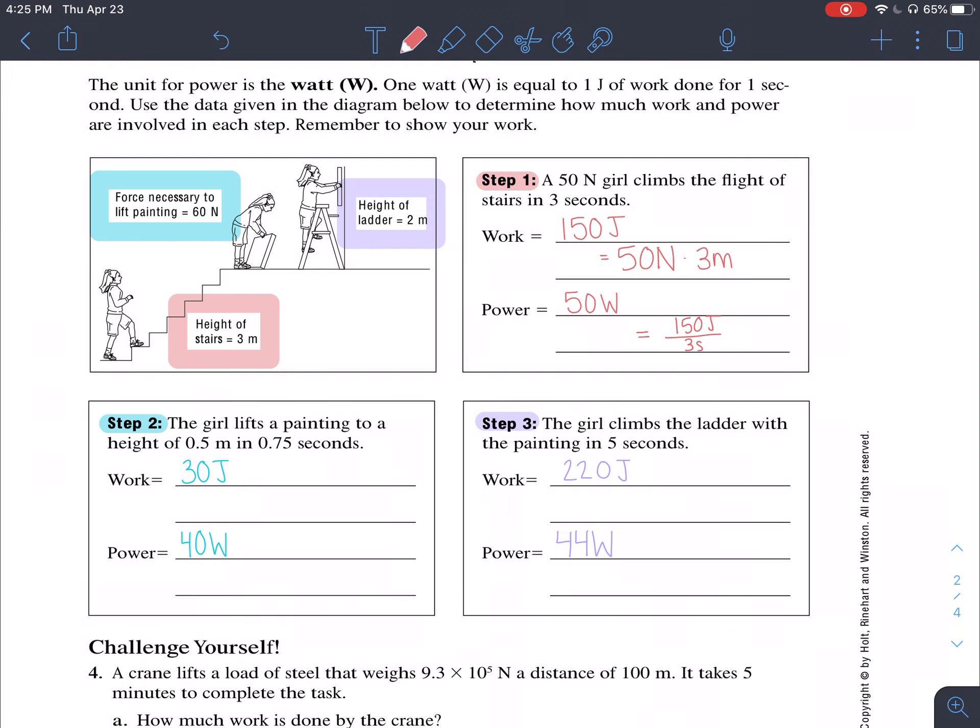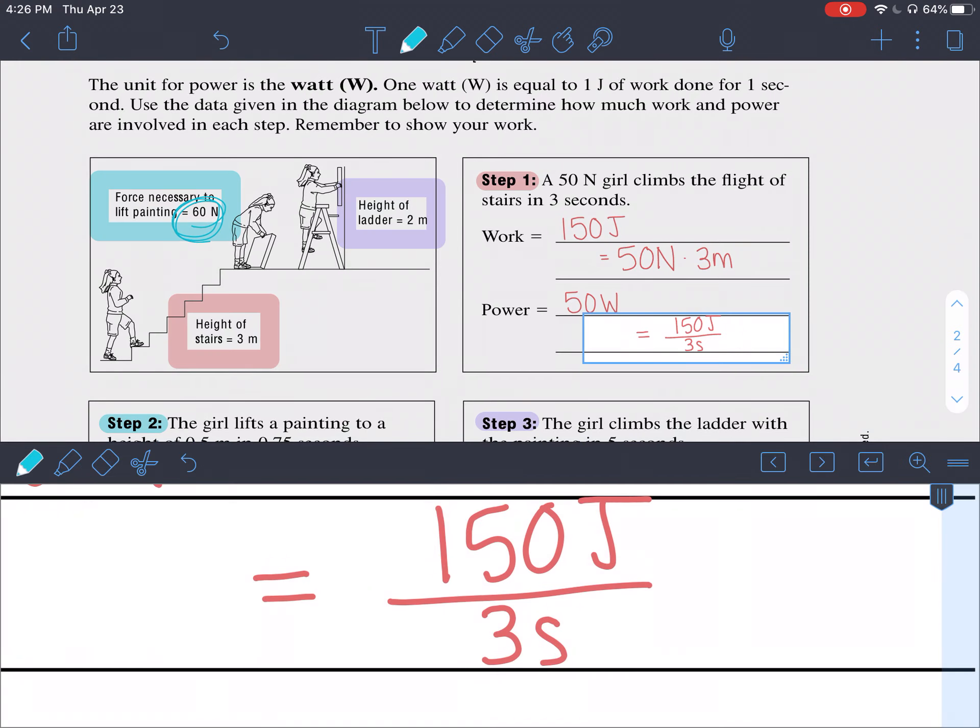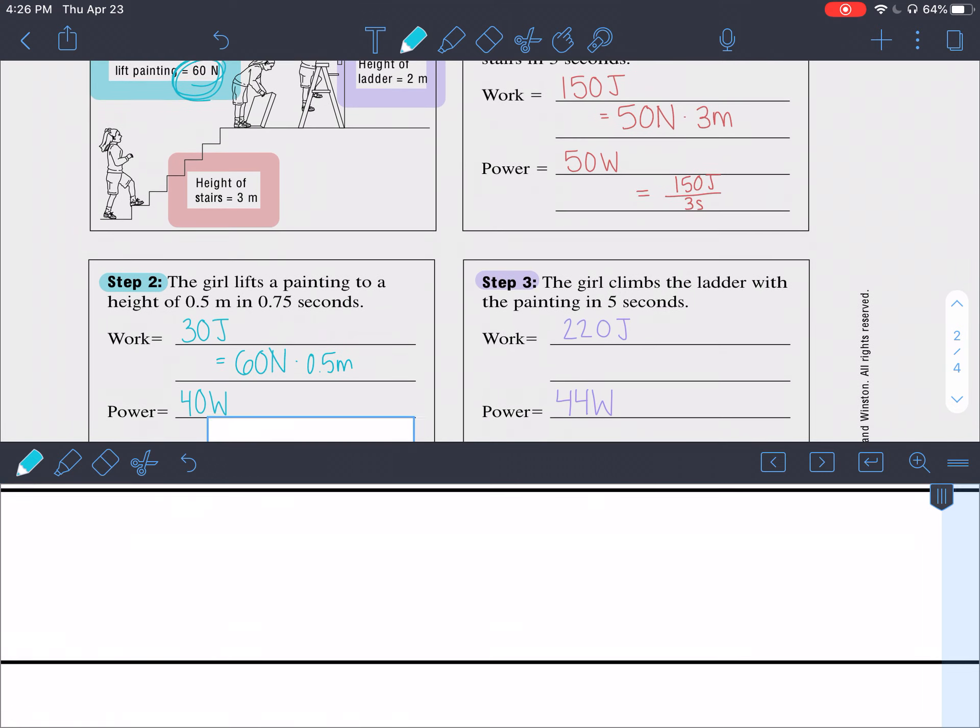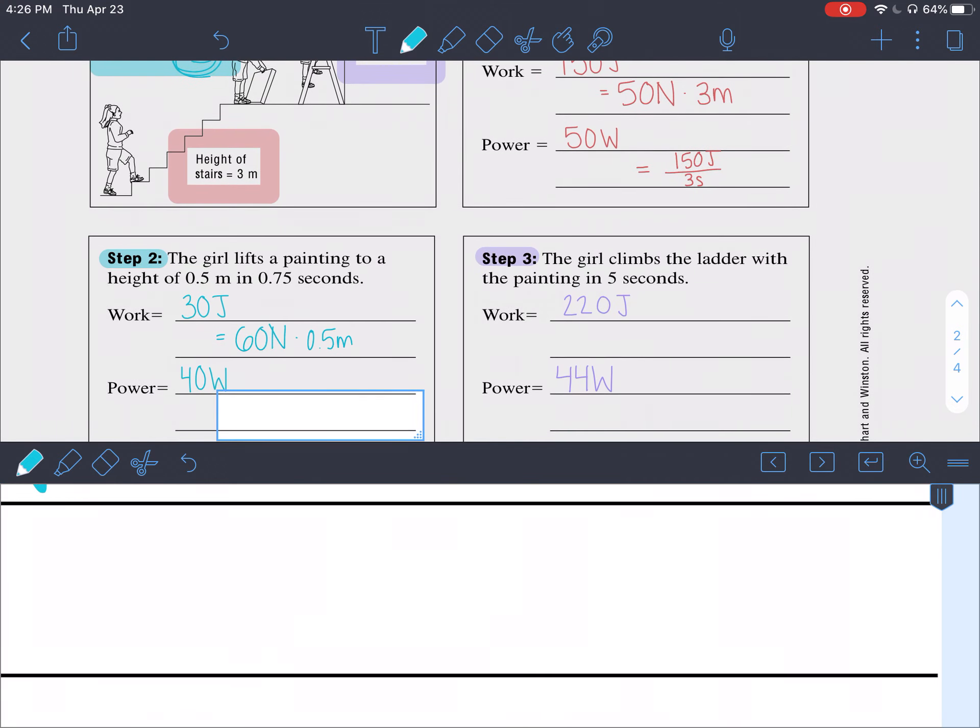All right on to step two in blue. Work is 30 joules for the girl who is now lifting a painting to a height of 0.5 in 0.75 seconds. We need to know her force to be able to calculate work. It's given to us up here, 60 newtons. We have 60 newtons times her displacement of 0.5 meters and we get 30 joules. And power, 40 watts, was found by taking the work 30 joules and dividing it by 0.5 seconds.